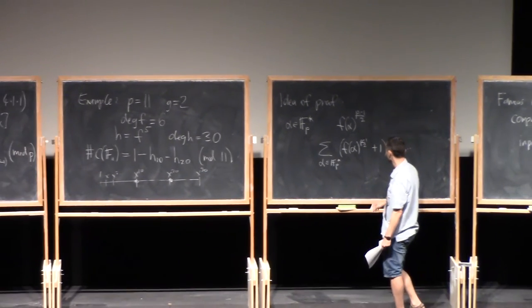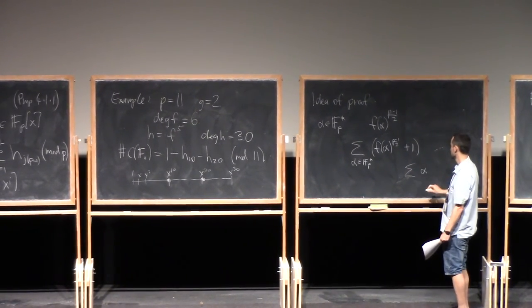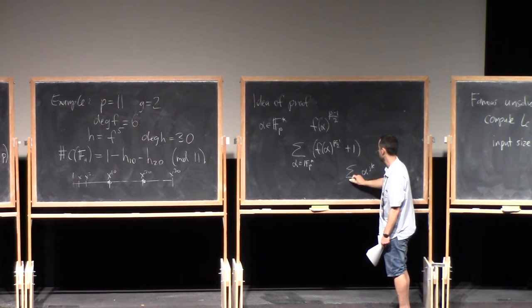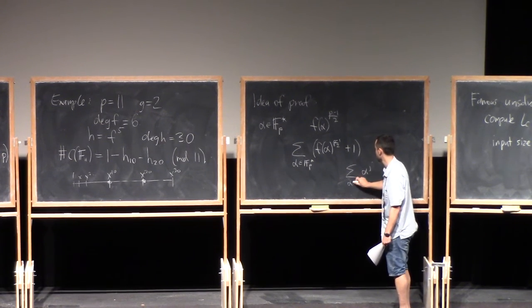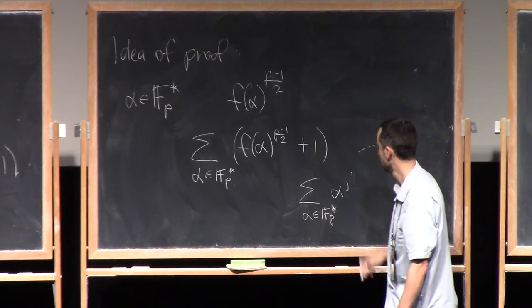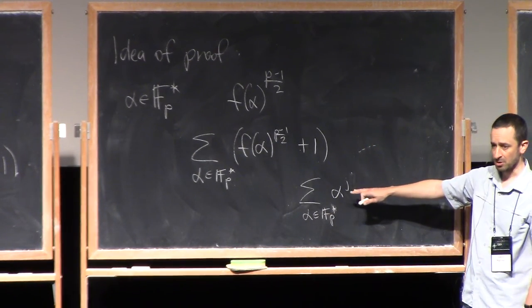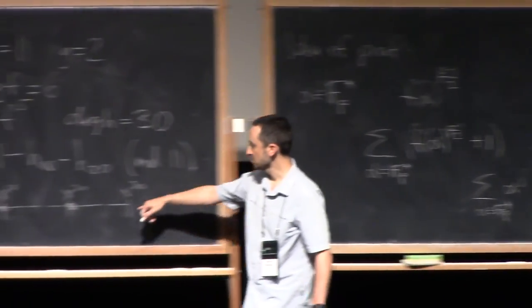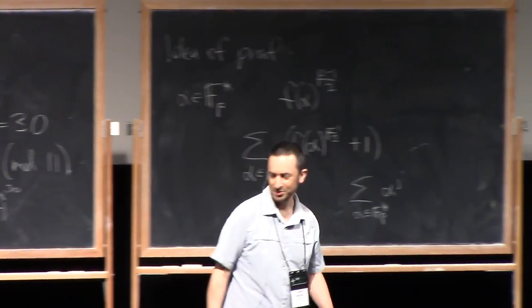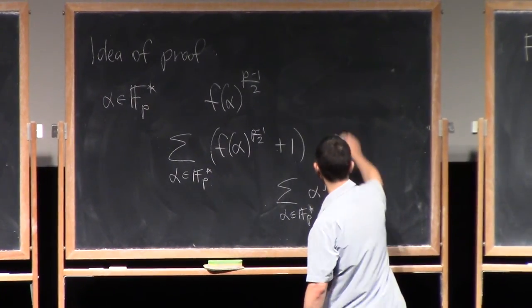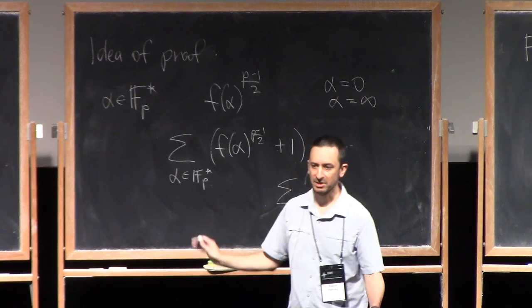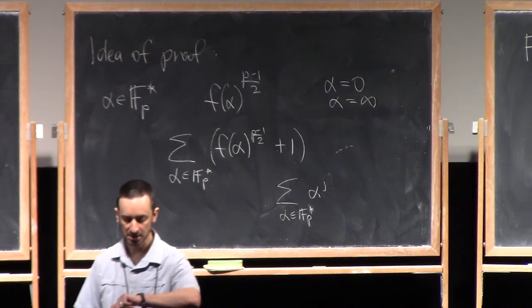then you'll get some sums that look like sum of alpha to the J, where alpha runs over F_P star. You get a bunch of terms like this, and most of these are going to be 0, and the ones that are going to be 0 are the ones coming from these coefficients here, and the only ones you're left with are these ones. And there's a slight complication that you have to worry about, there's some special cases for alpha equals 0 and alpha is infinity, and you have to deal with those, but then it all comes out in the wash. Okay, so I'll leave the details of that to you.